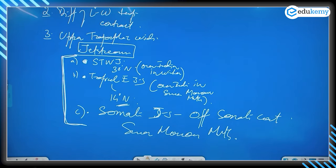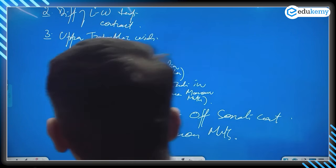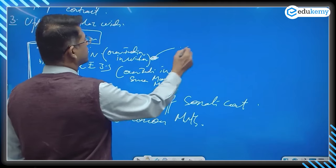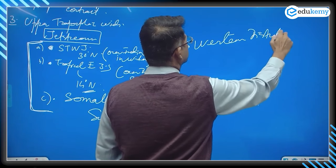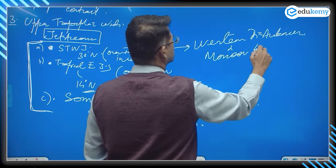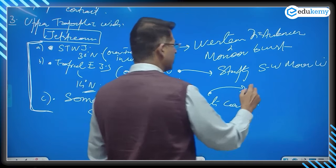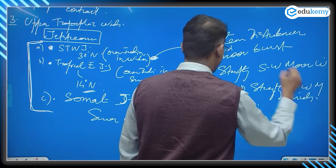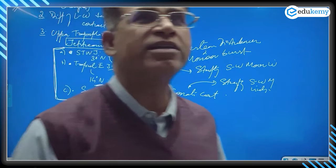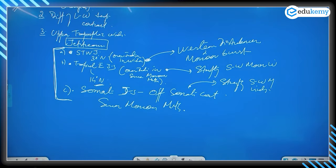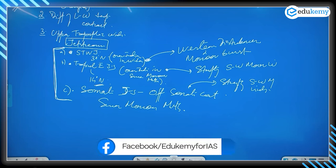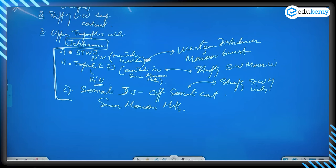The Somali jet stream impacts the monsoons in the summer monsoon months. The main role of the subtropical westerly jet stream (STWJ) is western disturbances and monsoon burst. The role of the Somali jet stream is strengthening southwest monsoon winds. The tropical easterly jet stream and Somali jet stream are both important for strengthening southwest monsoon winds. The monsoon burst refers to monsoon rains that happen suddenly along the Malabar coast.